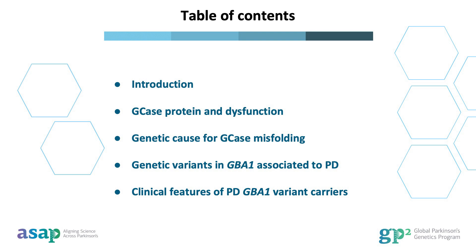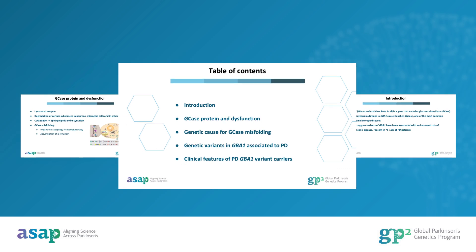After a brief introduction to GBA1, I will talk about protein misfolding — its primary mechanism of dysfunction — and I will delve more extensively into GBA1 genetic variants and their impact on the clinical phenotype of Parkinson's disease and Gaucher disease.